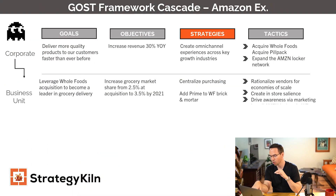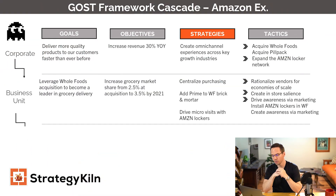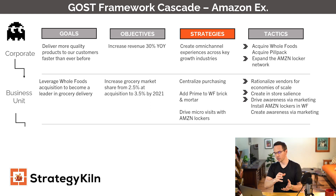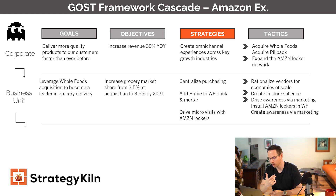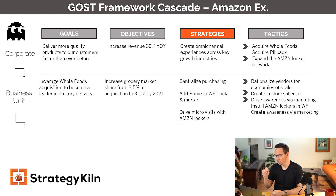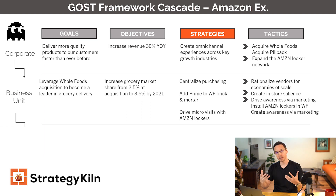What you see now is that these strategies from the corporate level flow down into the business unit level. We see 'acquire Whole Foods' as a tactic at the corporate level, and at the business unit level you can see that's cascaded down as part of the goal — leverage Whole Foods acquisition to become a leader in grocery delivery. We've got some numerical objectives there, then strategies and tactics. This is an example of the cascade effect and how there's all of this interlocking happening.